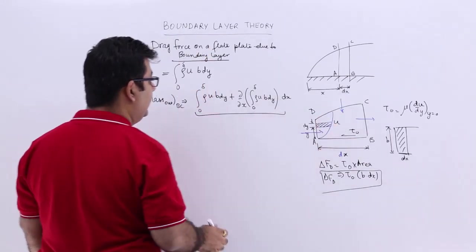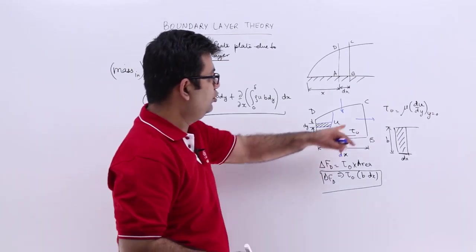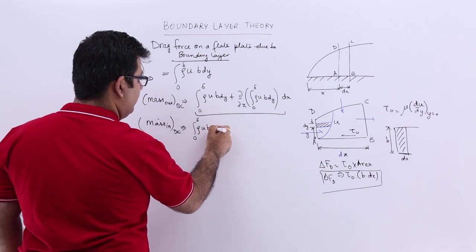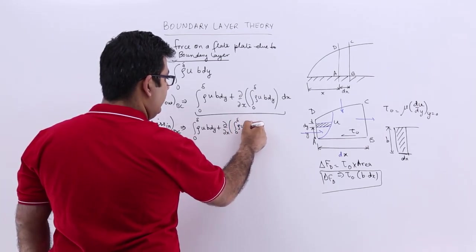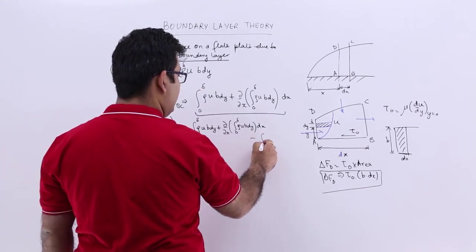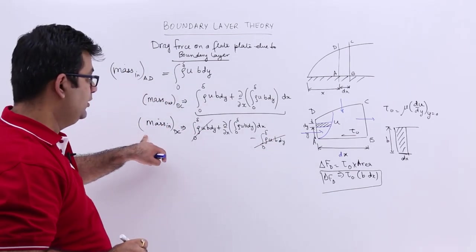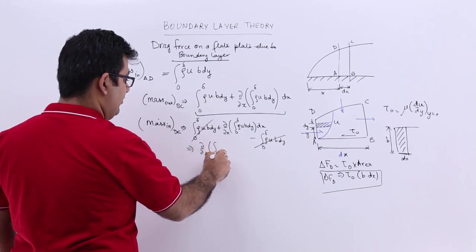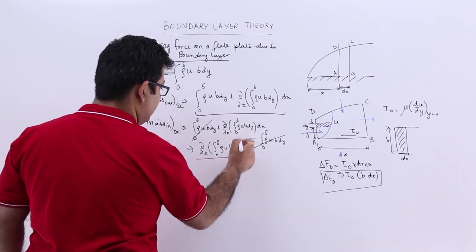To calculate the mass in from face DC: mass in from DC equals mass out from BC minus mass in from AD. The two identical integral terms cancel, leaving the mass in from DC equal to the partial derivative with respect to x of the integral from 0 to δ of ρ·u·b·dy, times dx.